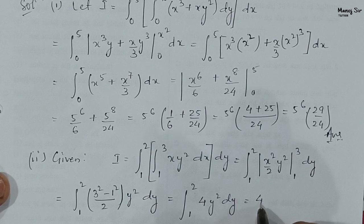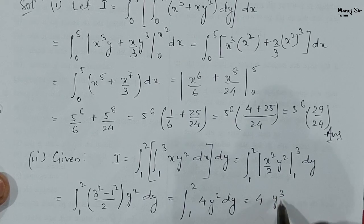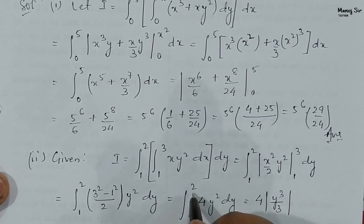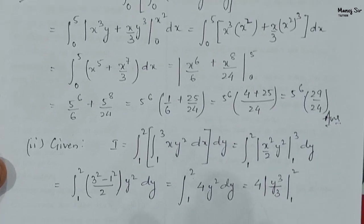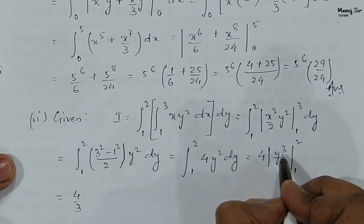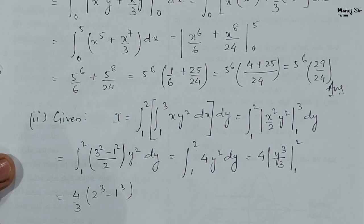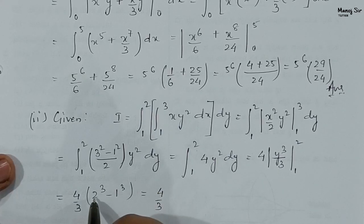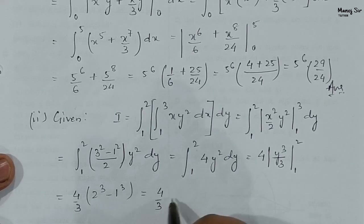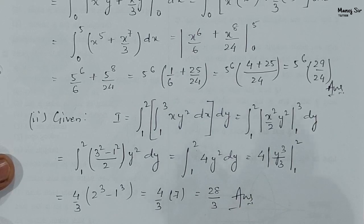Taking four as a constant and integrating with respect to y: four times y cube upon three, with limit from one to two. Applying limits: four upon three times two cube minus one cube. Two cube is eight minus one cube is one, so eight minus one is seven. Therefore four upon three times seven gives twenty-eight upon three, and this is the final answer.